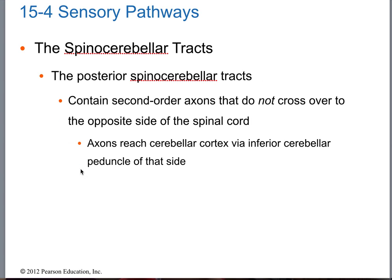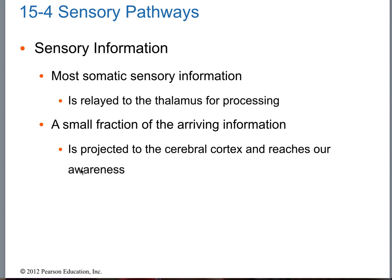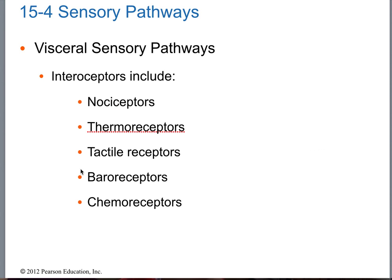Spinal cerebellar — balance, coordination, unconscious proprioception — we've gone over that several times. Let's do a quick review: pain, temperature, touch, pressure, and chemical — matching each to its receptor type. Baroreceptors for pressure, chemoreceptors for chemical. You guys can review that and we'll take a little break.